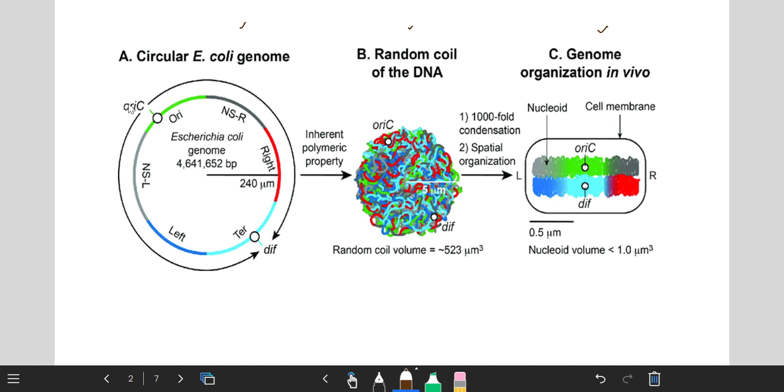This picture represents bidirectional replication, meaning two directions - right part and left part. This is the terminal part and this is the origin part. The NS part represents non-structural part, meaning this part does not participate in the DNA replication process.